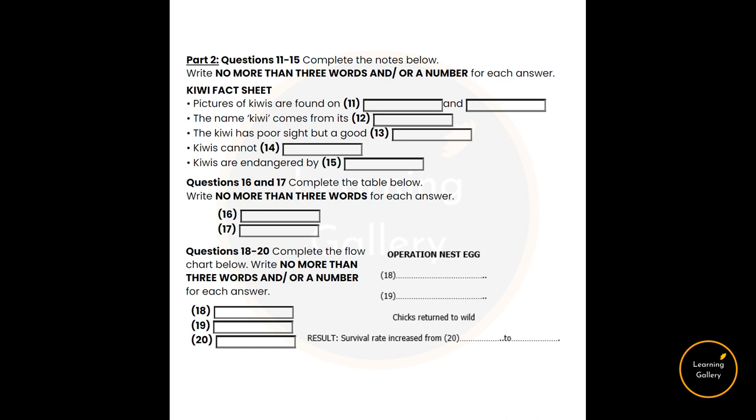As part of the action stage, which I just mentioned, we've introduced Operation Nest Egg. And this is where your money will be going. It works like this. It's a three-stage process. First of all, we go out to the kiwi's natural habitat and we collect kiwi eggs. This is the tricky part, because it can be very difficult to find the eggs. Then, in safe surroundings, away from predators, the chicks are reared. Now, this can be done on predator-free islands or in captivity. They're reared until they're about nine months old, at which stage the chicks are returned to the wild.